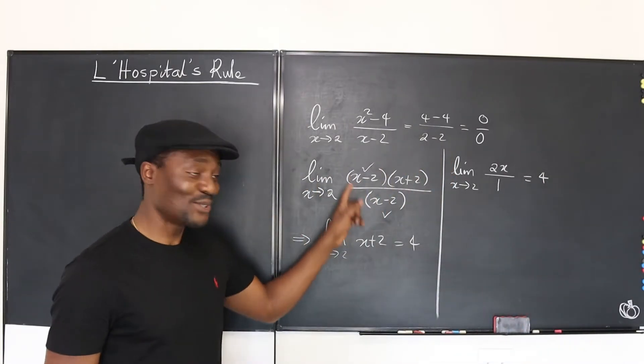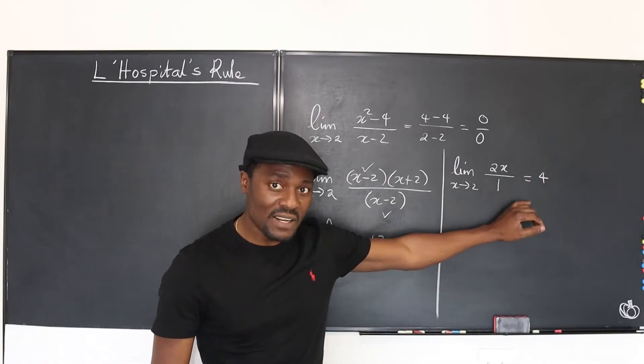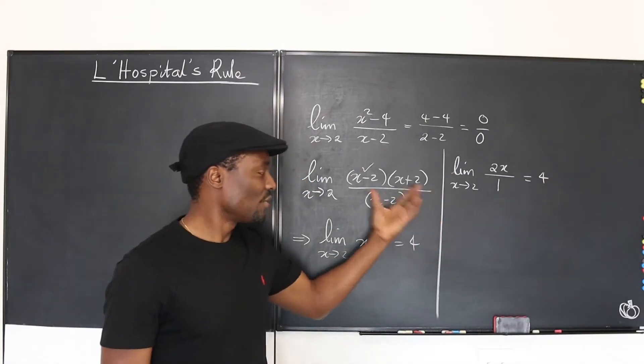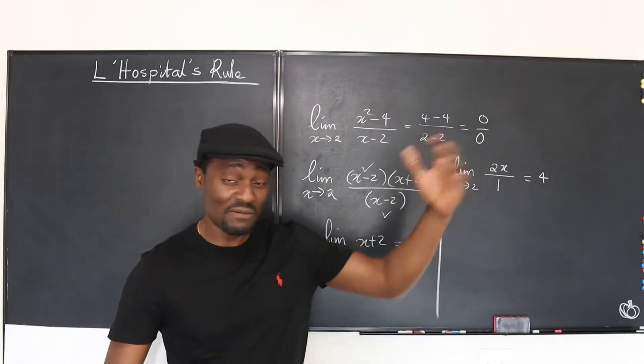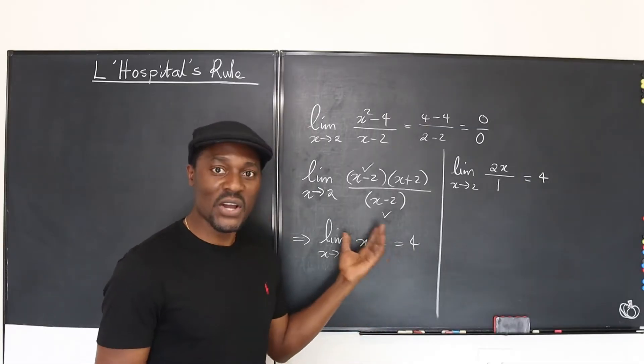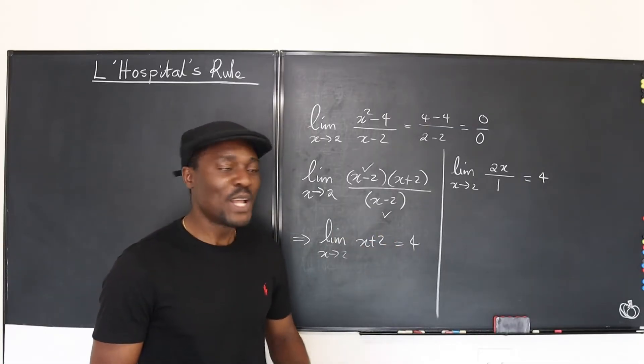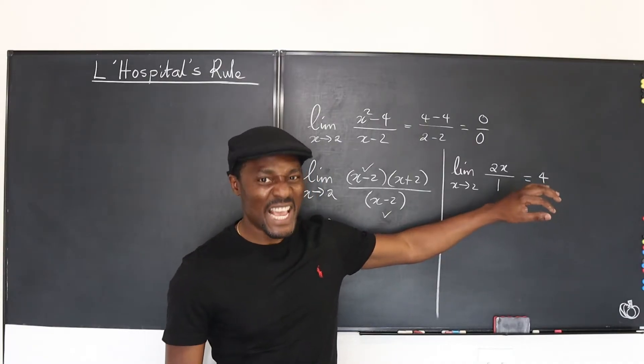You see, I didn't have to do all of these. Now, why is this an advantage? It is an advantage because sometimes the algebraic simplifications you need to do could be super complicated with several lines and several steps just to be able to eliminate whatever is causing the problem. So, L'Hôpital's rule will save you, especially if speed is what you need.